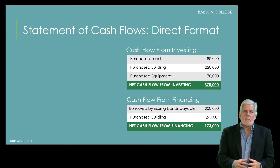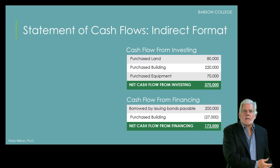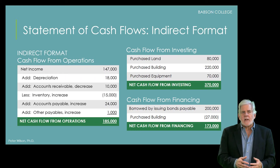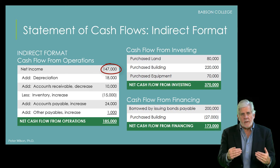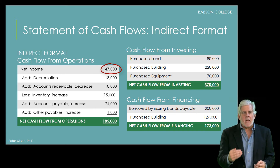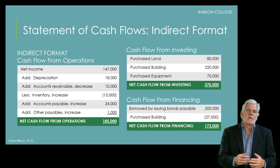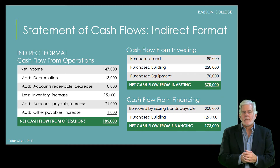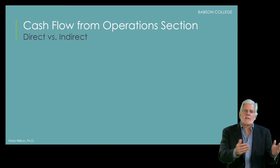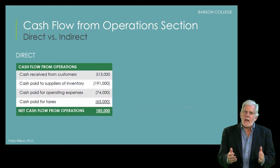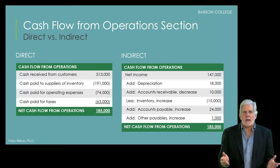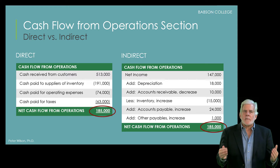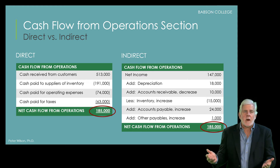In the indirect format, the only thing that changes is the operations section. Instead of showing the operating inflows and outflows separately, the operations section begins with net income from the income statement and presents a reconciliation of net income to the actual net cash from operations. Note that the investing and financing sections are identical. You should take a minute to study this to make sure you see that both formats arrive at the same cash flow from operations of $185,000.